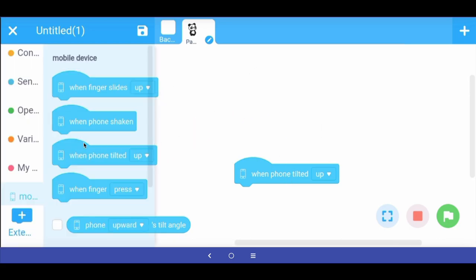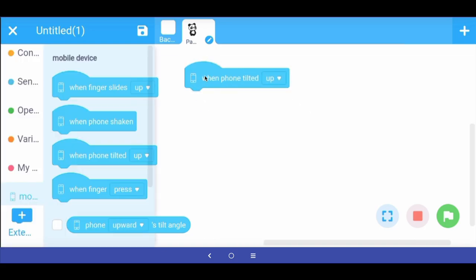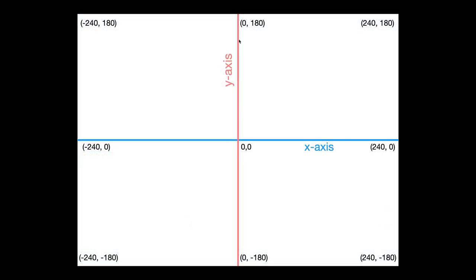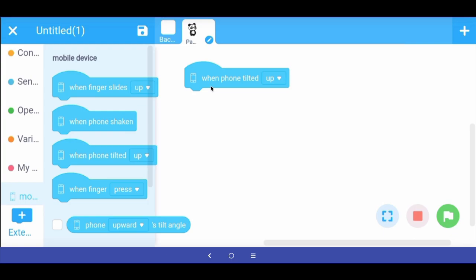The one we are going to use is "when phone is tilted." When the phone is tilted up, we want the sprite to move up the y-axis. The stage in mBlock is a coordinate plane — across the horizon is the x-axis and vertically is the y-axis. The center point is zero, zero. Moving a sprite up increases the y value; moving down goes negative y. Moving right goes positive x, moving left goes negative x.